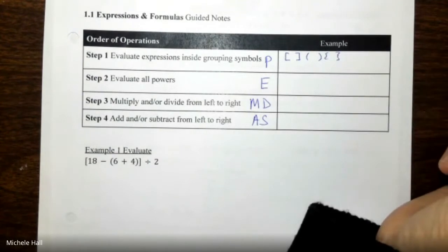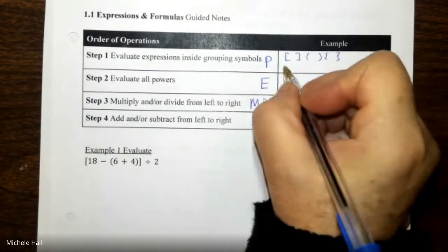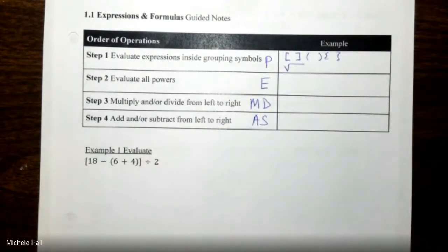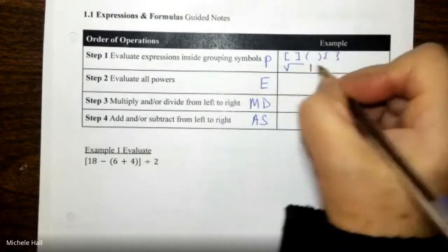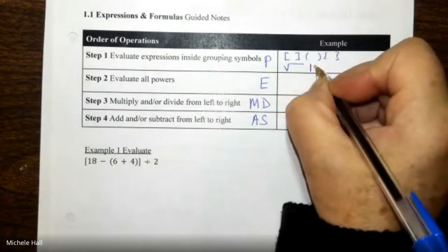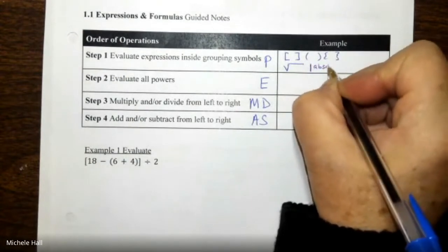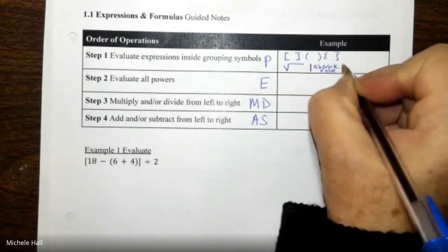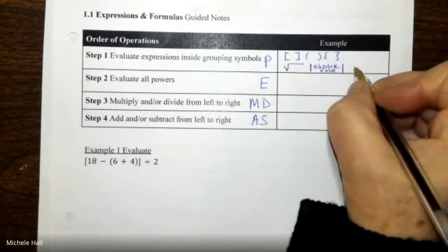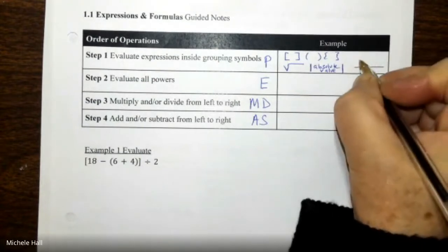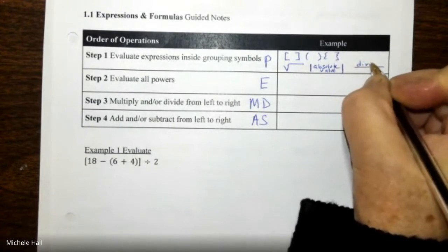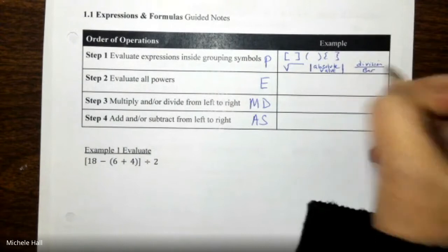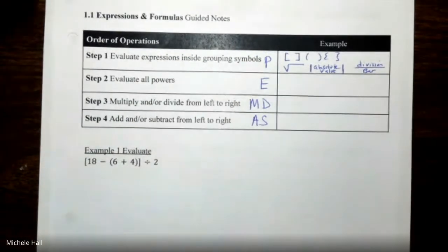Grouping symbols would also be a square root - I can put a lot of things under a square root - the absolute value, and we also have the division bar. These are all grouping symbols.